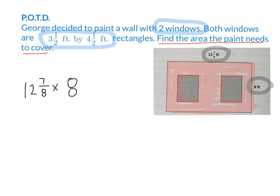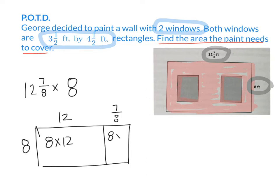If I were to do an area model, I could split 12 and 7/8 up into two parts. 12 and 7/8. What about 8? Do I have to split that up? So this is really like doing two multiplication problems. 8 times 12 and also 8 times 7/8. What's 8 times 7/8? 7. What's 8 times 12? 96. So what's the area of the entire wall? I can find the area of the entire wall by doing 96 plus 7, which is? 103. 103 square feet.